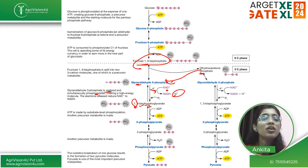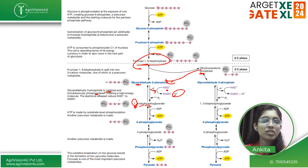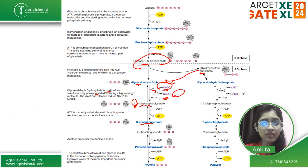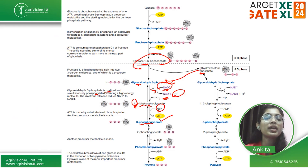G3P is oxidized — electrons are released, reducing NAD⁺ to NADH + H⁺ — and phosphorylated by adding a phosphate group, forming 1,3-bisphosphoglycerate. This 1,3-bisphosphoglycerate is then converted to 3-phosphoglycerate, meaning one phosphate is removed. How? ADP accepts that phosphate and is converted to ATP — di becomes tri, so one phosphate molecule is added to ADP to form ATP.